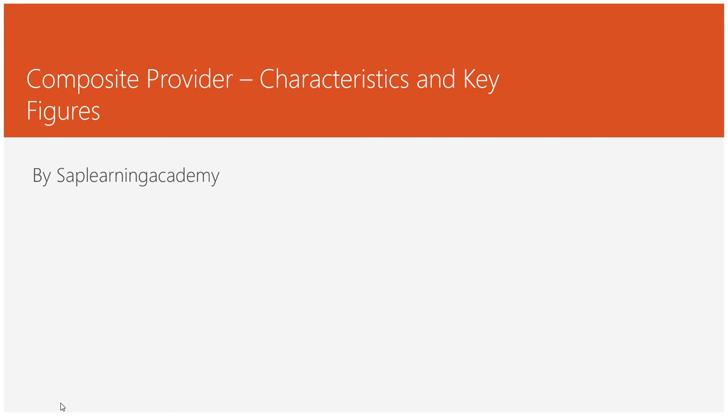Hello and welcome to SAP Learning Academy and welcome to this tutorial. In this tutorial today, I will be talking about the characteristics and key figures in composite provider, meaning that when you create a composite provider by doing union of several providers or by joining of several providers, then when you go into the output tab, you find there are a lot of characteristics and key figures.